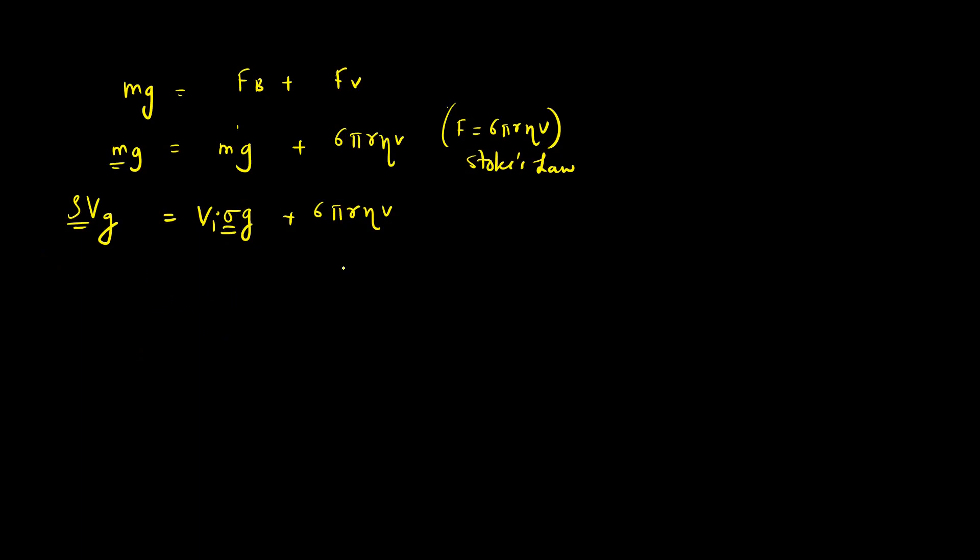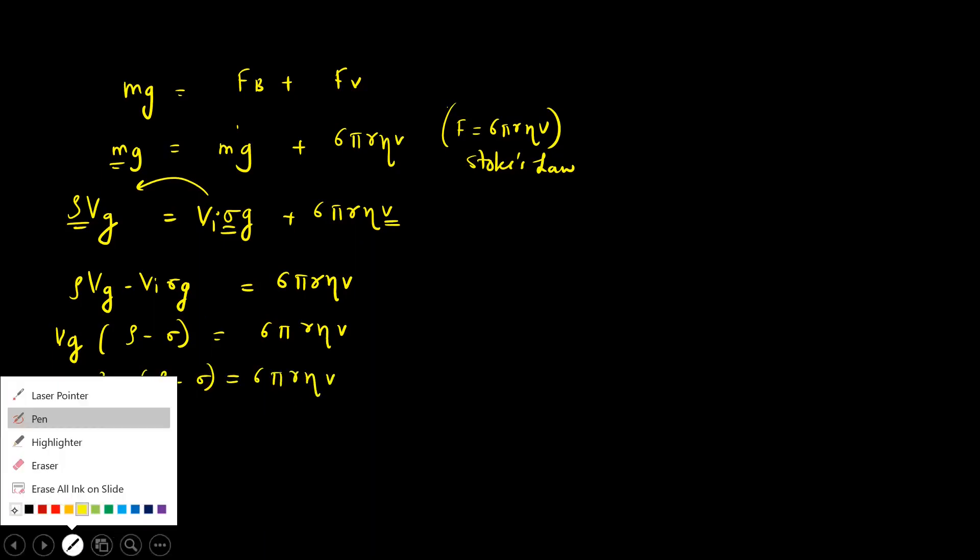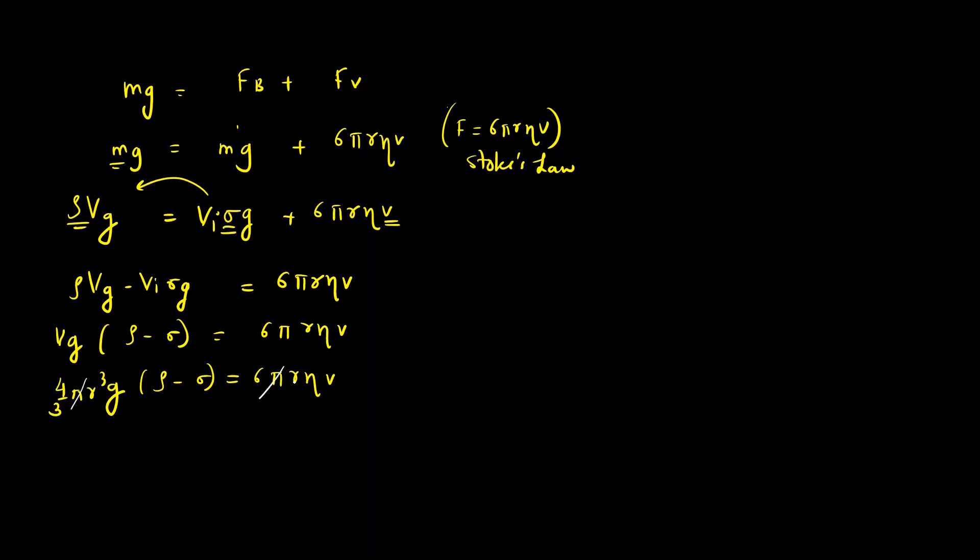Buoyant force: fluid gives it, so density of fluid. Weight: body gives it, so density of body. I am interested in V, so rho V g minus V sigma g should be equal to 6 pi r eta v. Volume common, g common. I am left with rho minus sigma equals 6 pi r eta v. Volume of sphere everyone knows, 4 by 3 pi r cubed. Any cancellations? Pi, pi, r cube becomes r square. Three twos, correct. So I am left with 2 by 3 r square g rho minus sigma divided by eta.